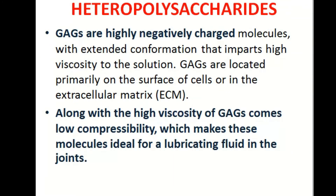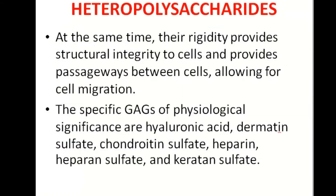One of the most important properties is that glycosaminoglycans are highly negative molecules, which gives them very high viscosity. They are found in extracellular matrices. Their compressibility is very low, and due to this nature, they serve as lubricating fluids in joints.